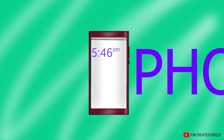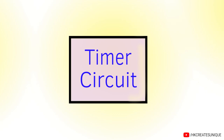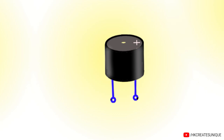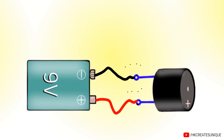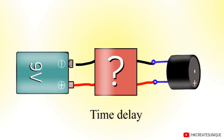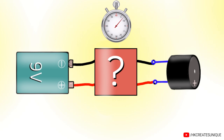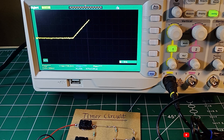Have you ever wondered how a phone turns its screen off automatically after some time, or a traffic light changes signal over time? This is done using timer circuits. Let's say there is a buzzer and a battery. If I connect them together, the buzzer buzzes immediately. Now what circuit do I need to connect in between them to give a time delay? That's what I'm going to make and explain in this video.